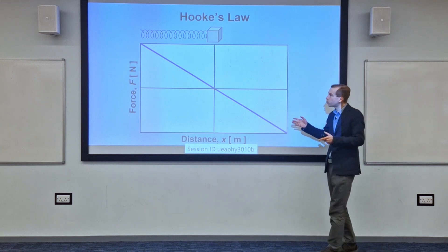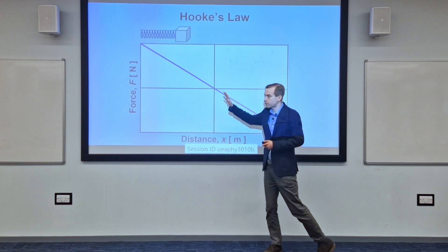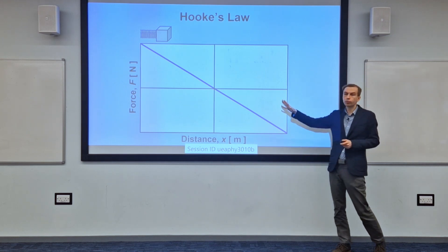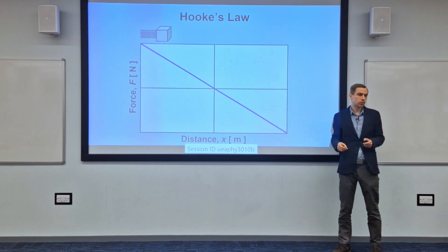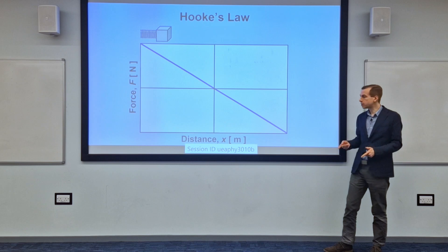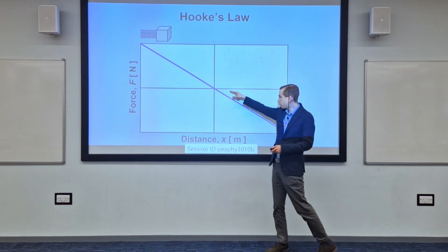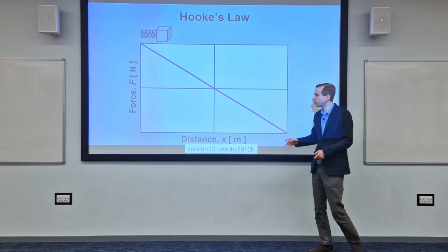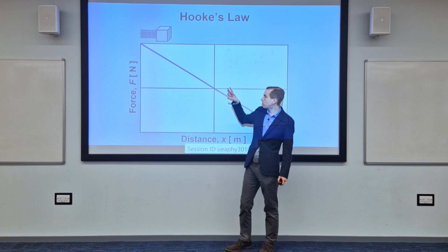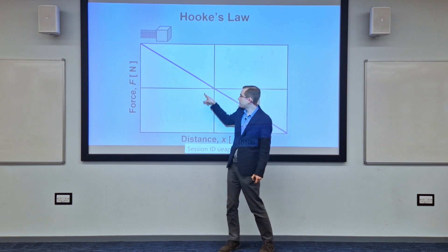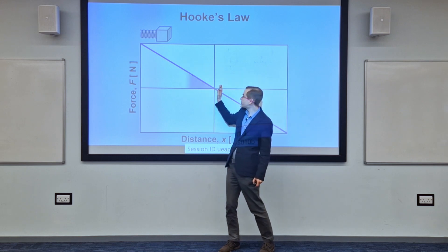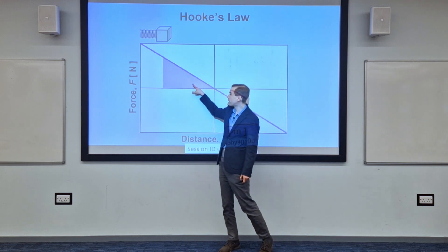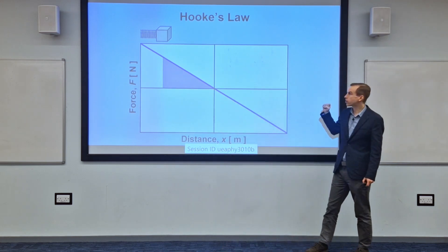Now let's imagine we've got our spring and we're going to compress it — we're doing some work, exerting a force over a distance. Work is always force times distance, but what's interesting here is that our force depends on the distance. Another way of saying work is force times distance is that work is the area under this line. So if we shade in this region, that's giving us force times distance, which is the work. This shaded region is the amount of work done when we've compressed the spring.